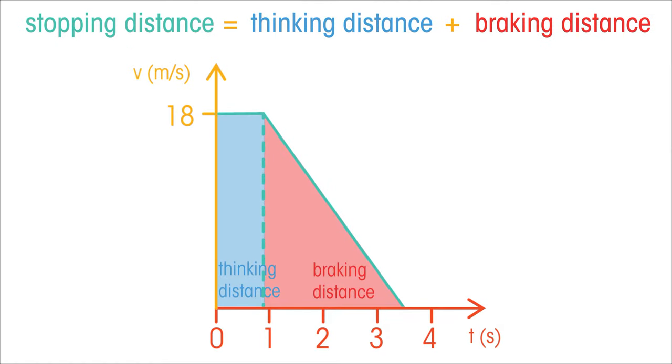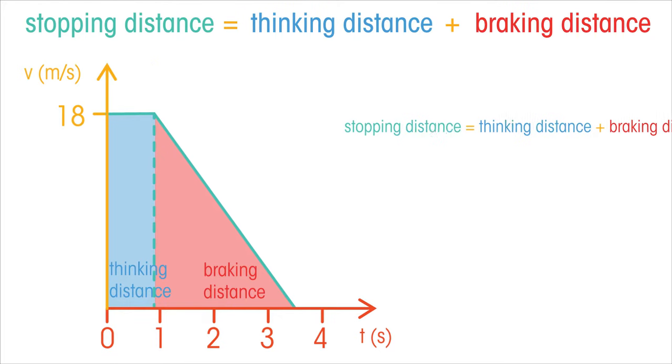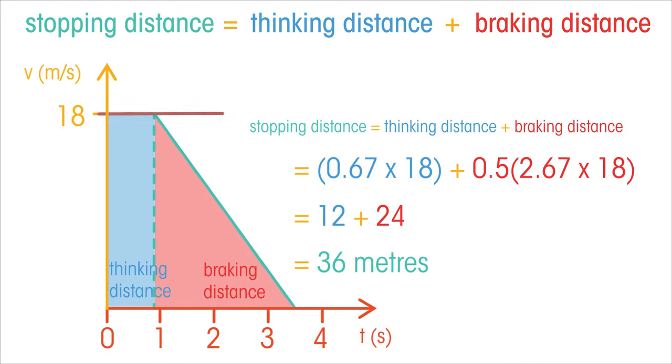We can draw total stopping distance on a graph like this. As always, time is on the x-axis and velocity is on the y-axis. We can find the thinking and stopping distances from the areas. See how the speed does not change during the thinking time, which lasts for two seconds.